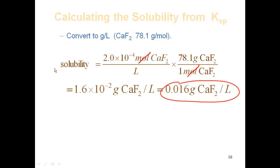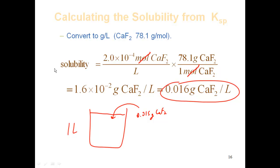That is the solubility. Most of the time we calculate molar solubility, but I wanted to do solubility in grams per liter to illustrate what saturation point means. Say I had a one-liter container and I add 0.015 grams of calcium fluoride. What happens? I'm going to have 0.015 grams worth of calcium ions and fluoride ions floating around in a 2-to-1 mole ratio. How much solid will I have? Zero — all of it will be ions in solution, because I'm below the saturation point of 0.016 grams per liter.